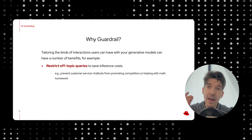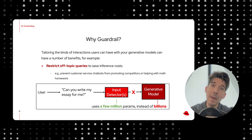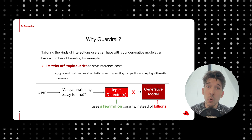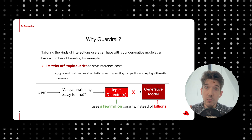Now, there are a number of benefits to guardrailing just beyond preventing the models from saying things you don't want. For example, it can massively save on inference costs, because your detectors can be orders of magnitude smaller than your generative model — they might be tens of millions of parameters instead of tens of billions — so you can short-circuit irrelevant or off-topic queries well before they ever hit your very expensive generative model.